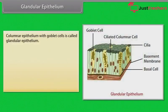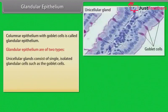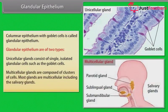Columnar epithelium with goblet cells is called glandular epithelium. Glandular epithelium is of two types: unicellular glands consist of single, isolated glandular cells such as goblet cells; multicellular glands are composed of clusters of cells. Most glands are multicellular, including the salivary glands.